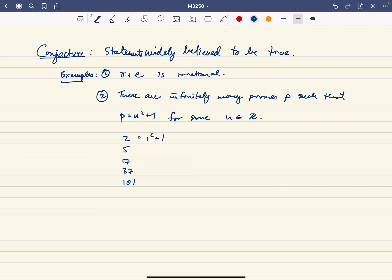So 2 is 1² + 1, 5 is 2² + 1, 17 is 4² + 1, 6² + 1, 10² + 1.